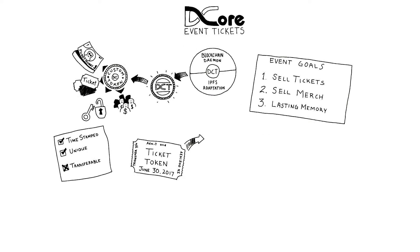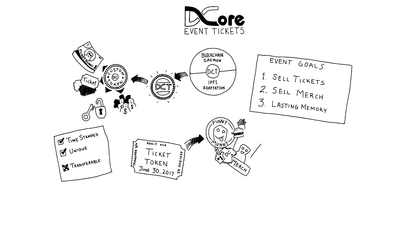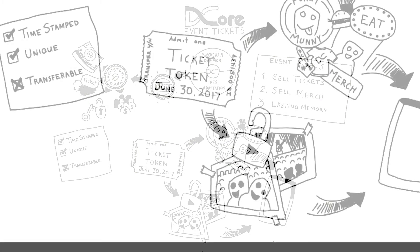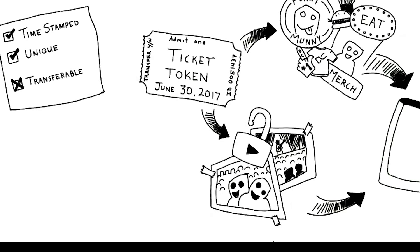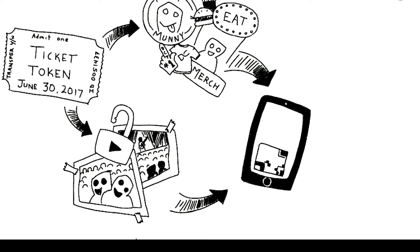On top of the ticket token, you can add a second custom token, this time as a loyalty reward, that can be used during the event for things like merchandise and concessions. And finally, the ticket token can also act as a digital property token, which unlocks exclusive online recordings of the event. With just three custom tokens, you have taken an ordinary ticket and transformed it into a super ticket.